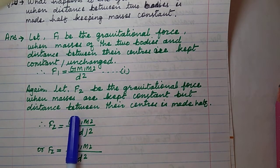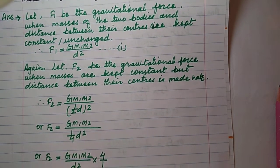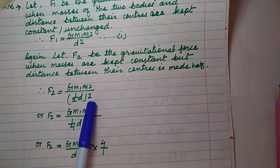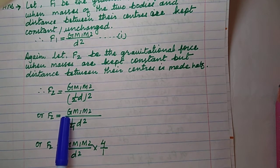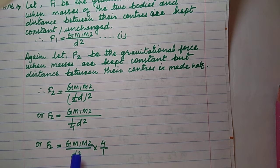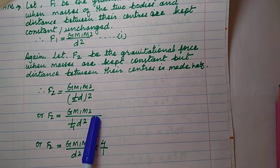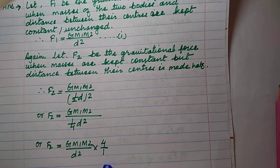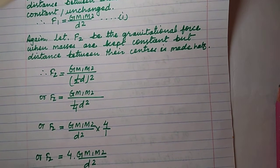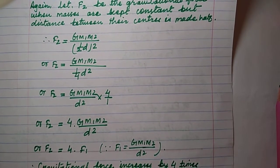With distance halved: F₂ = Gm₁m₂/(d/2)² = Gm₁m₂/(d²/4). Simplifying: F₂ = 4Gm₁m₂/d². Since F₁ = Gm₁m₂/d² from equation 1, we get F₂ = 4F₁. The new force equals 4 times the previous force.